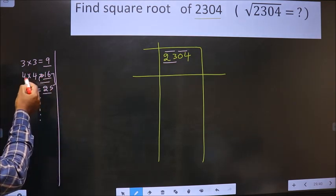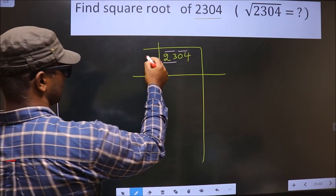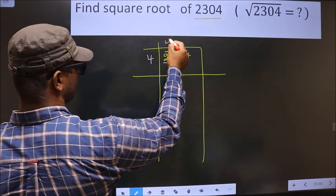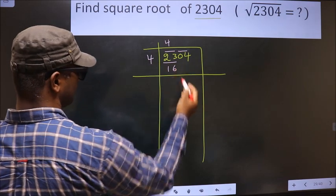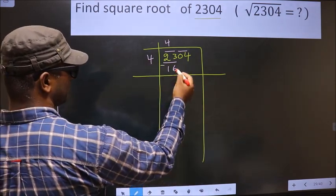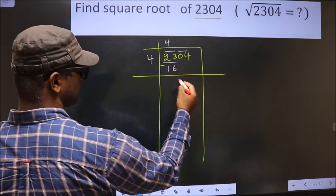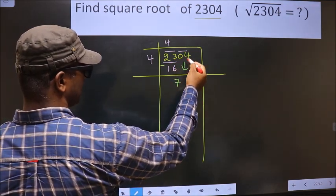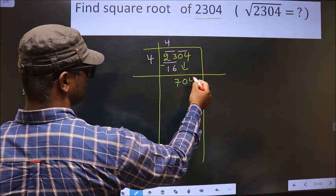16 is for 4 times 4. So here we take 4, 4 and here 16. Now you subtract. 23 minus 16 is 7. Now this pair will come down making it 704.